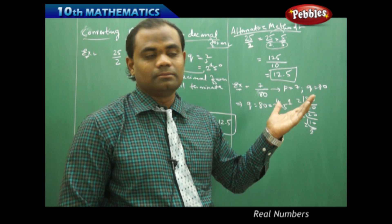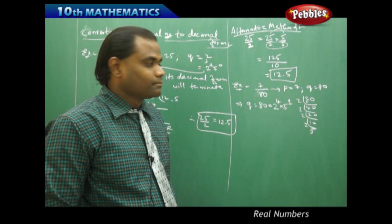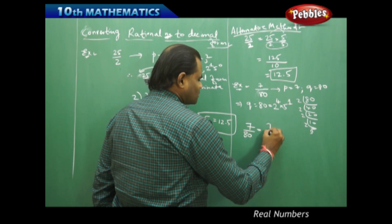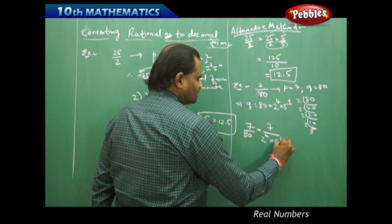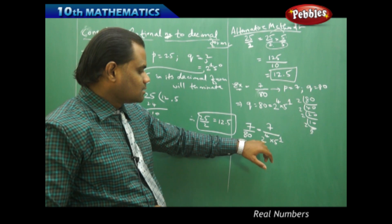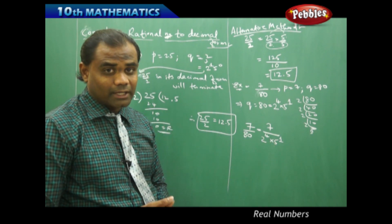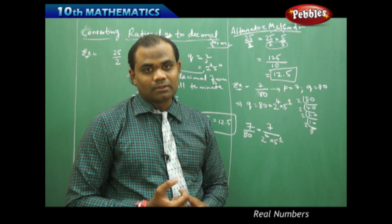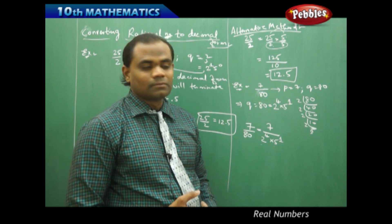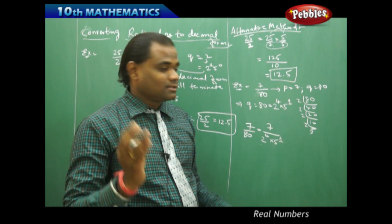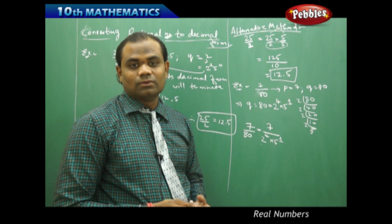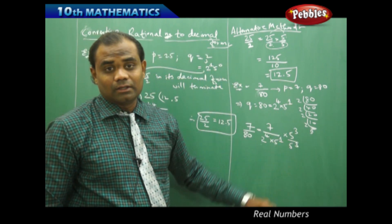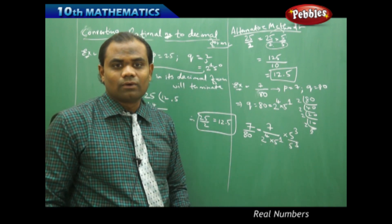Using the alternative method for 7/80: since 80 = 2^4 × 5^1, I need to make the powers of 2 and 5 equal so the denominator becomes a power of 10. My power of 2 is 4 and my power of 5 is 1, so I need three more 5s. Therefore I multiply and divide by 5^3, so that 5^1 × 5^3 = 5^4 by the first law of indices, making the powers of 2 and 5 both equal to 4.